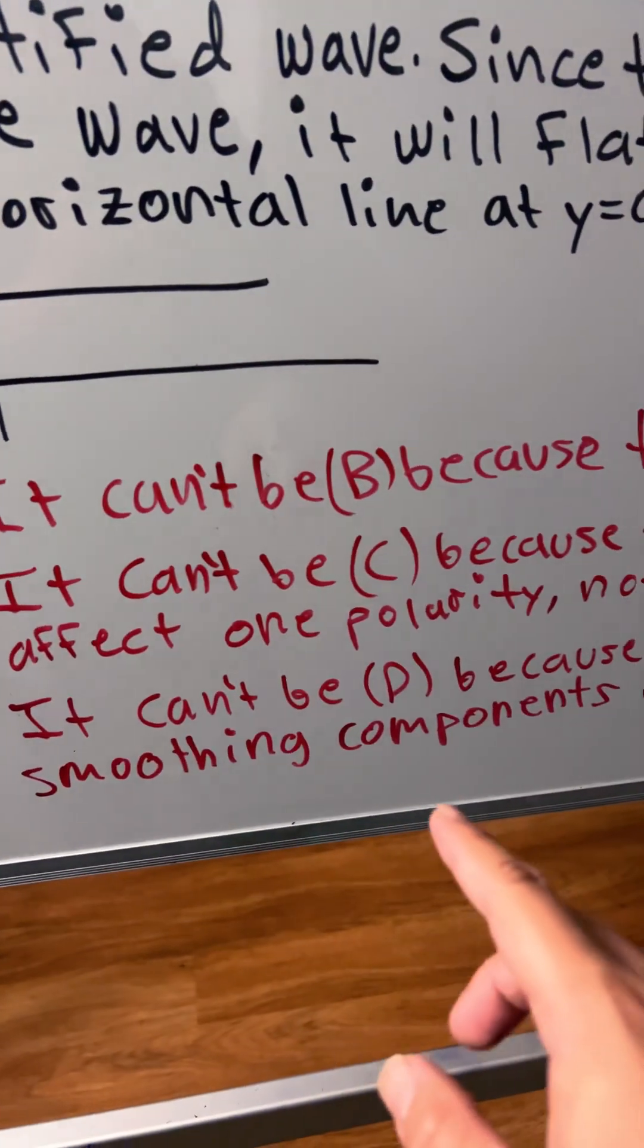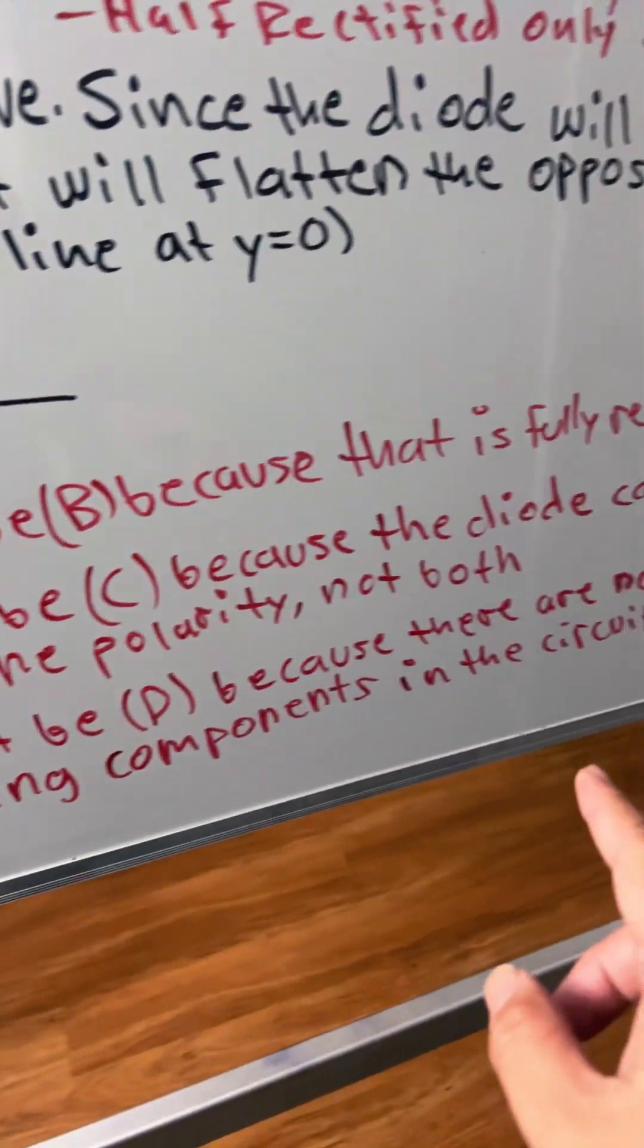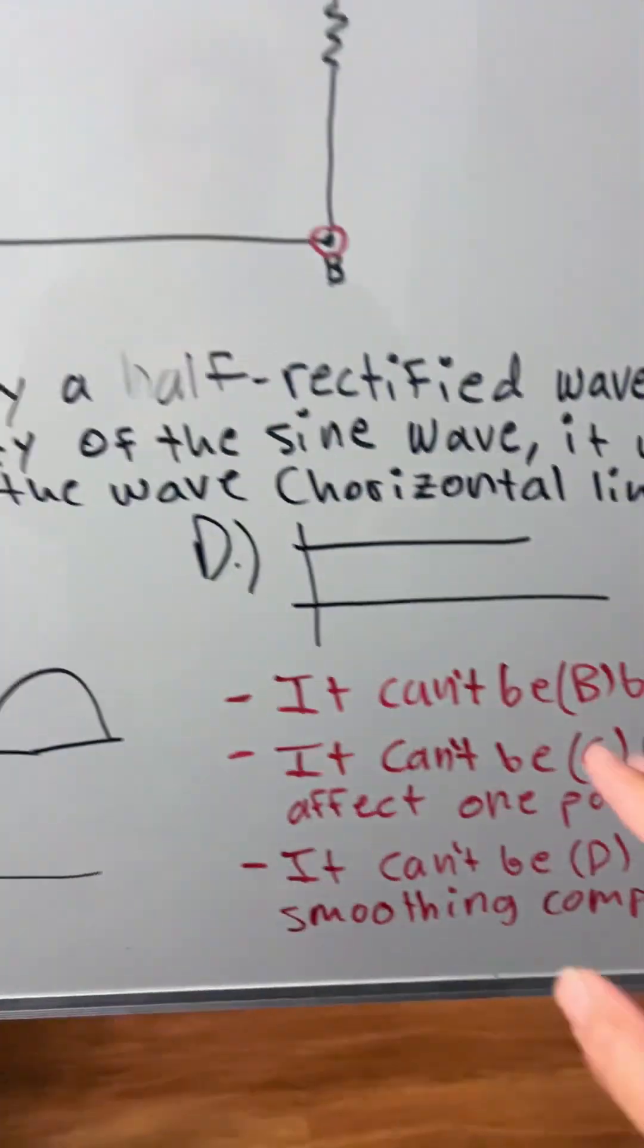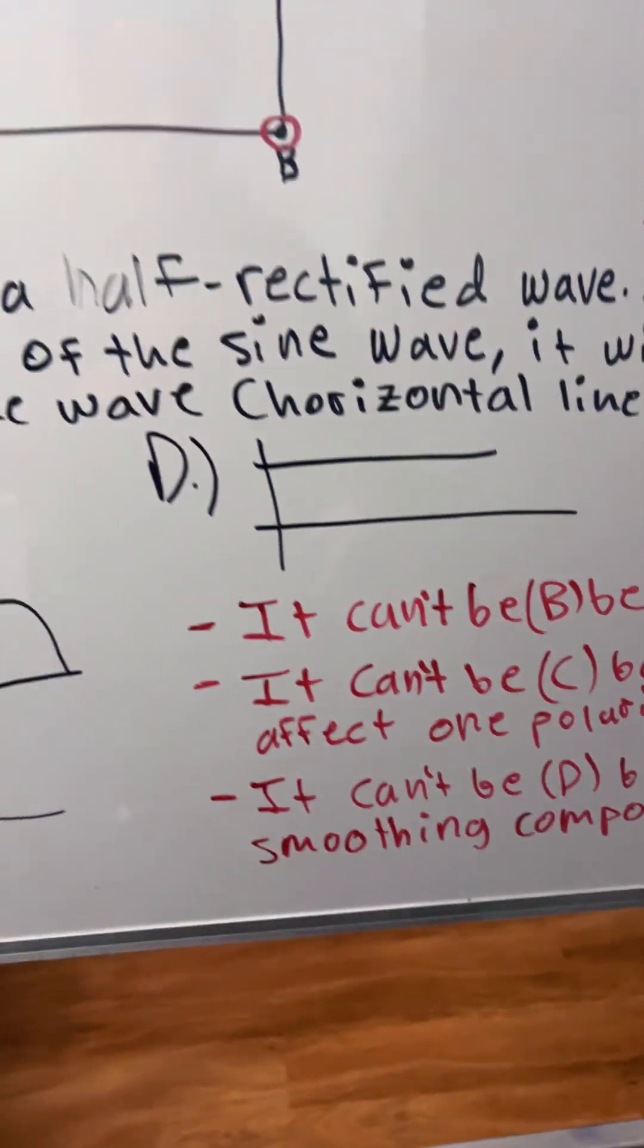And it can't be D because there are no smoothing components in the circuit.